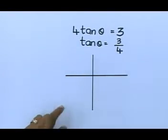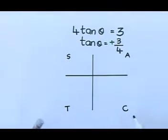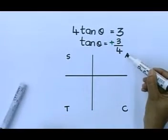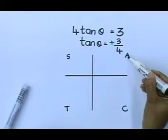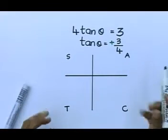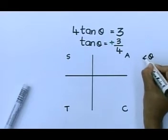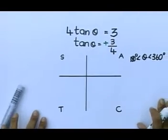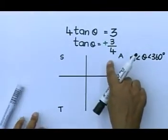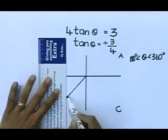You can see that tan is positive. Now, everybody, we know all stations to Cape Town. Tan is positive in the first and in the third quadrant. So your sketch can only be in the first or in the third quadrant. How do you know where? They told you that θ is between 180 and 360 degrees, so it can't be in the first quadrant. Your sketch is definitely going to be in the third quadrant.